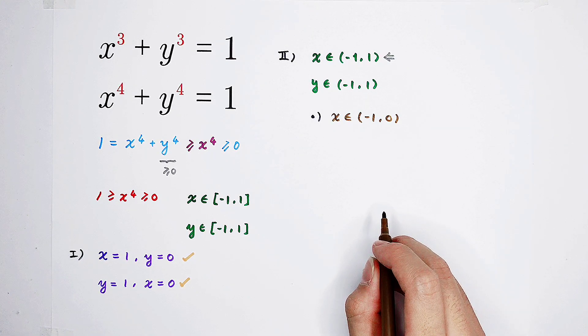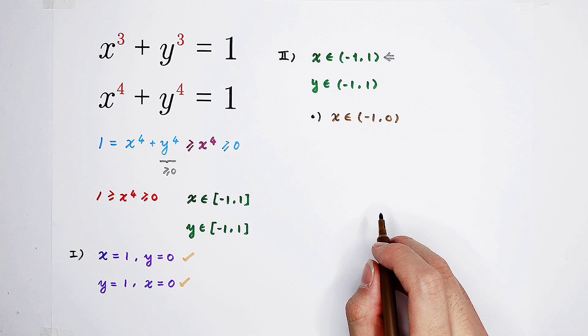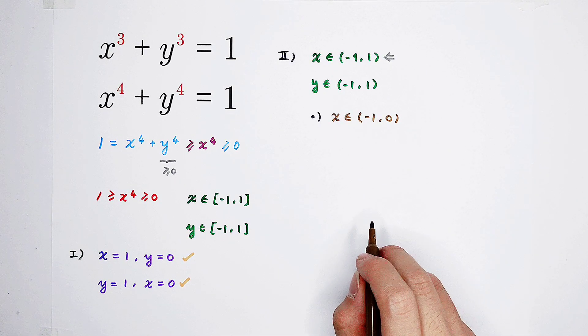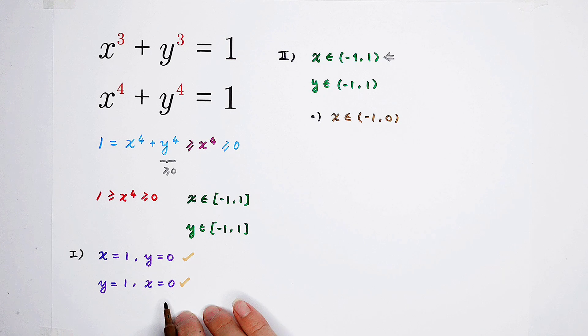Here, I'm going to separate into x is in the open interval from negative 1 to 0 and from 0 to 1. Of course, 0 is not inclusive. Why? Because when x equals 0, y equals 1. We have a solution pair.